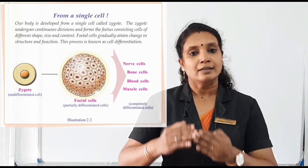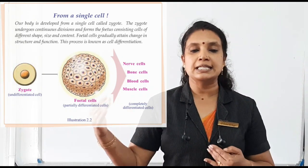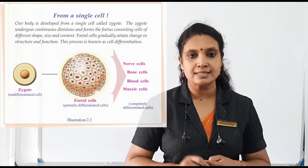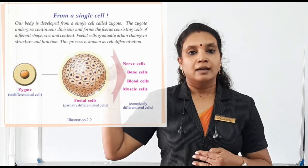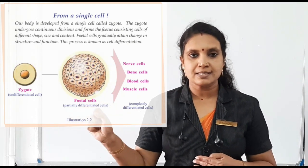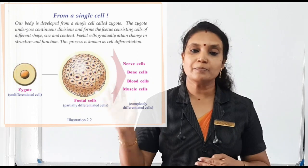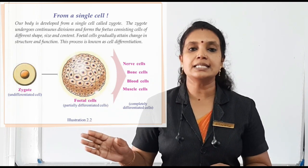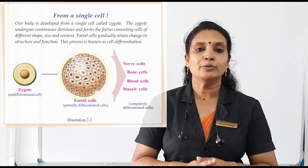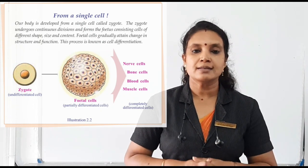And when the specialized cells like nerve cells, bone cells, etc. are formed from these fetal cells, they are fully differentiated. That means they have their own specific structure and function. So, hope now you have understood what is cell differentiation and how different types of cells are formed from the zygote.